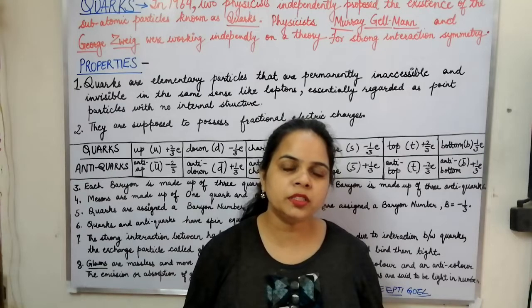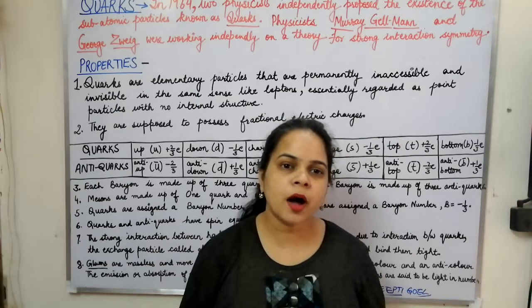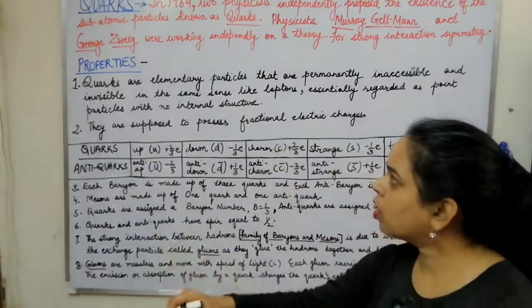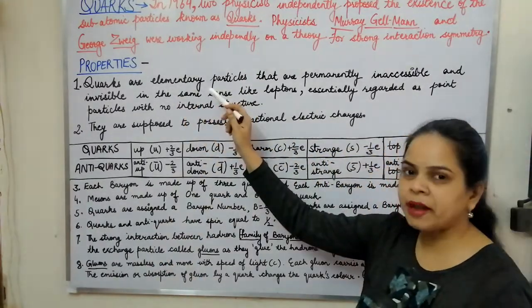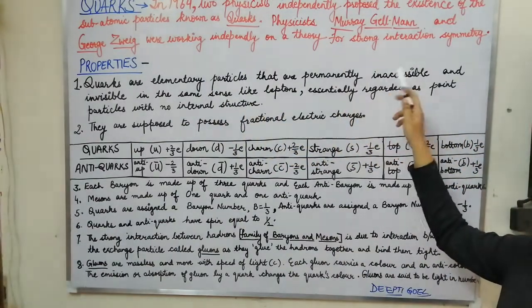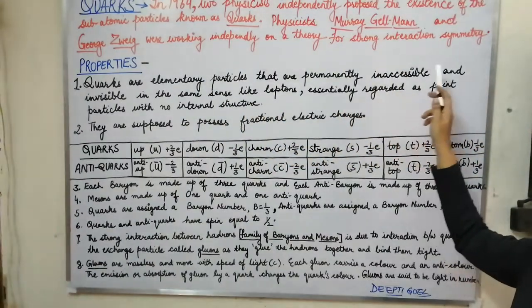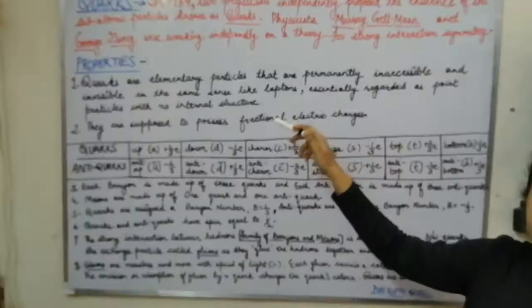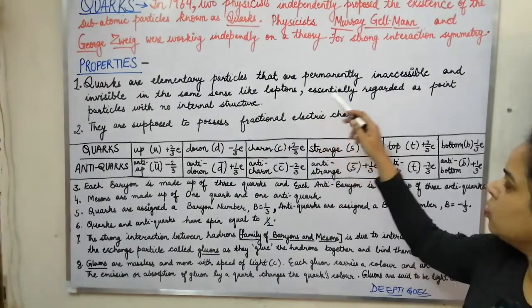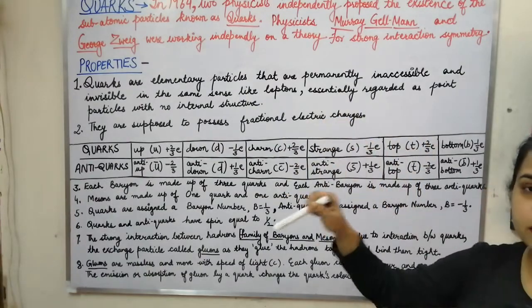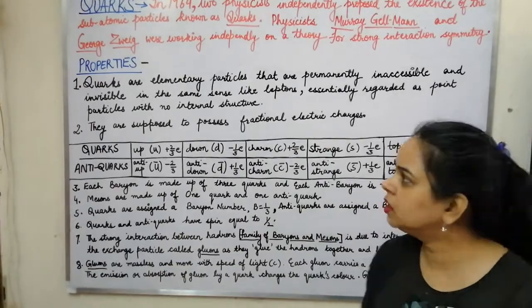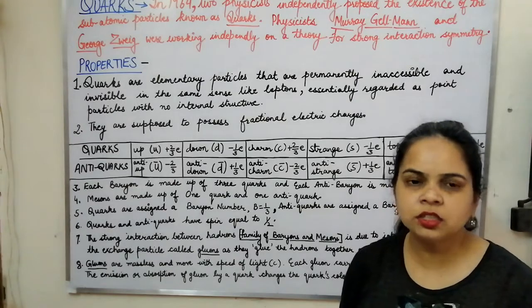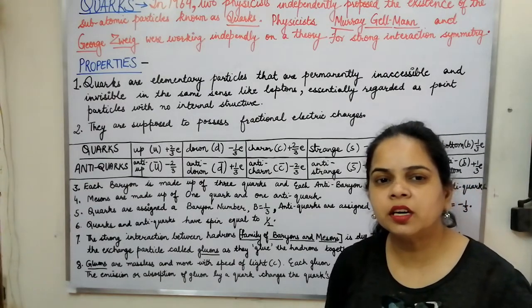On the basis of these properties, the subatomic particles were named as quarks. Quarks are elementary particles that are permanently inaccessible. They are inaccessible and invisible in the same sense that the leptons are invisible, and since the leptons are regarded as point particles, these quarks are also regarded as point particles. The quarks have no internal structure.